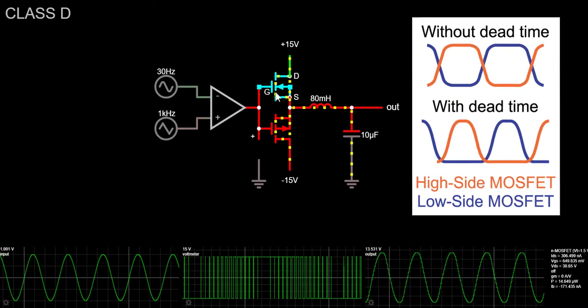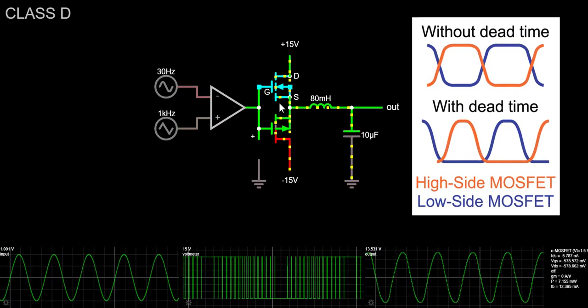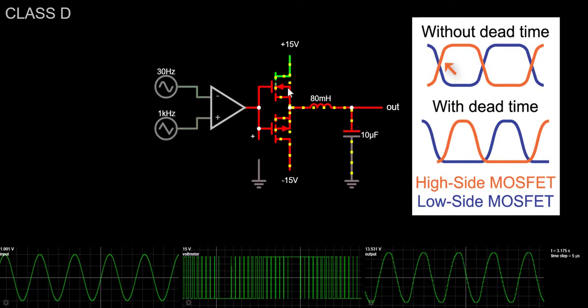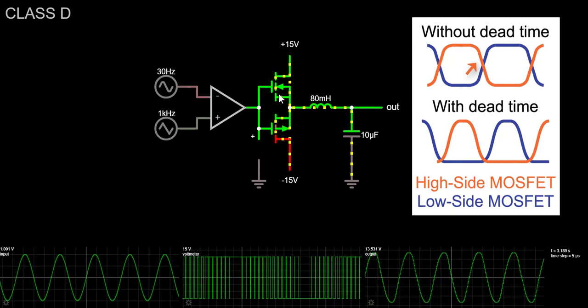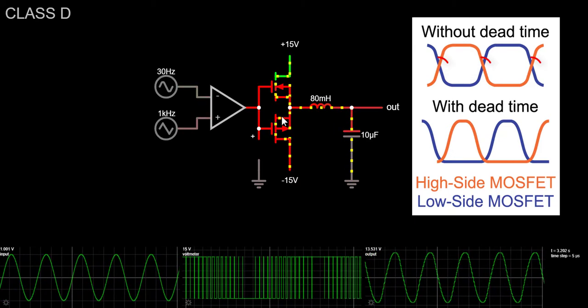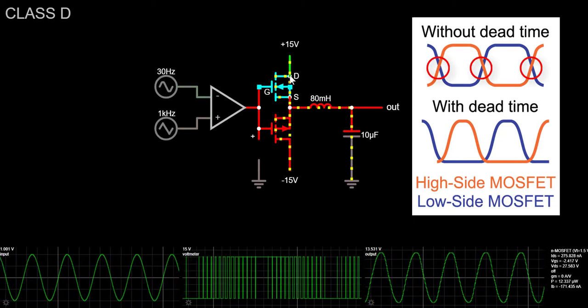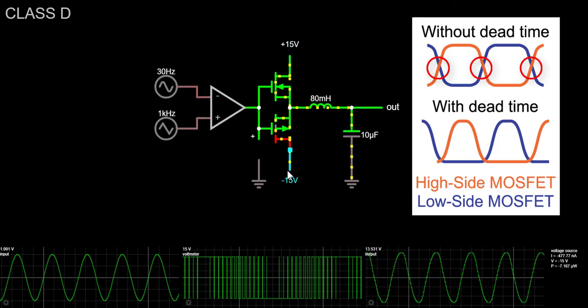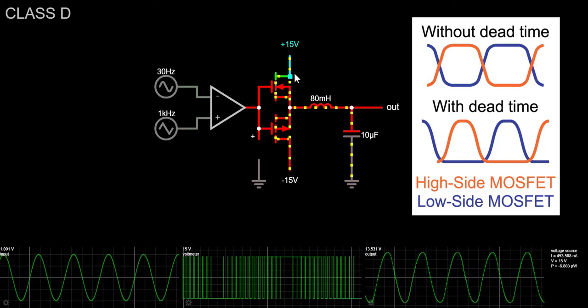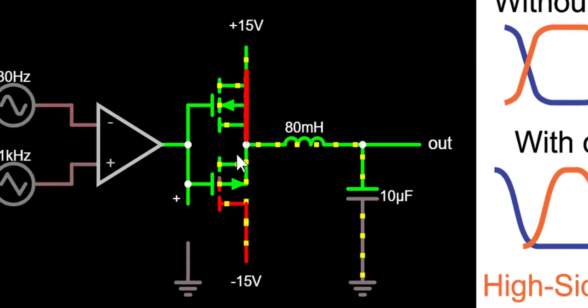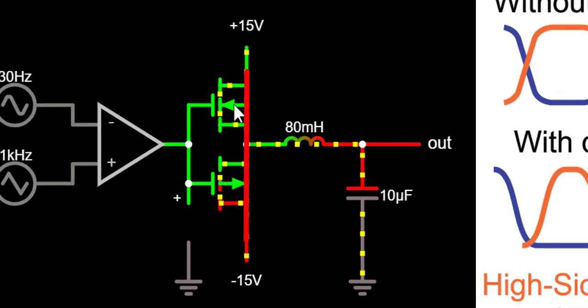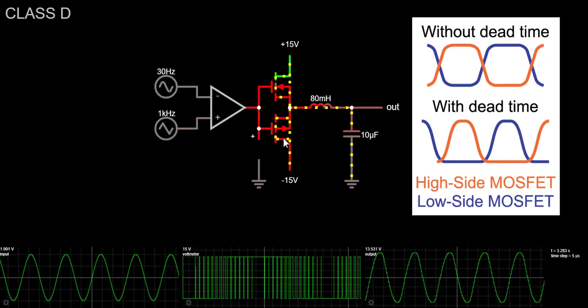Because the switching of the MOSFETs is not done instantaneously, but it's more like going up and down a hill, the transistor's ON time will overlap, creating a low impedance connection between the positive and negative power supply rails. This causes a high current pulse to pass through our MOSFETs, which can obviously lead to failure.